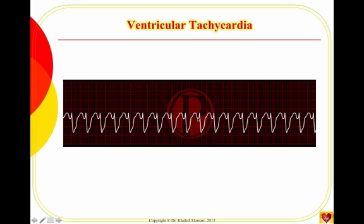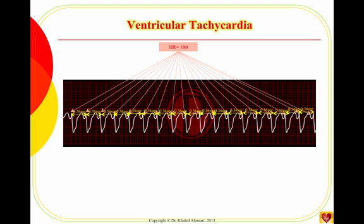So far, the only rhythm where the QRS is wide is the third degree heart block — but the major difference is that third degree block is always bradycardia, always slow. So whenever you see a wide QRS that is regular and fast, it's VTAC. For example, a rate of 180 with QRS complexes much wider than normal — that's VTAC.